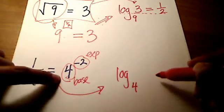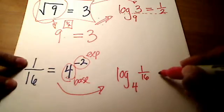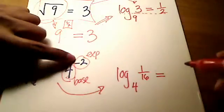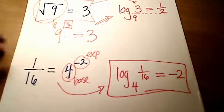On the same line as the word log goes the answer part, which in this case is 1 16th. And it's equal to my exponent, which is a negative 2. So there it is in its equivalent logarithmic form. Pretty cool.